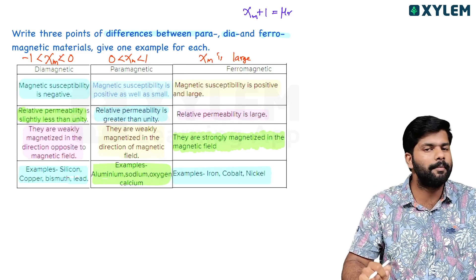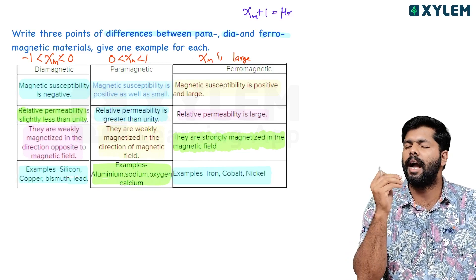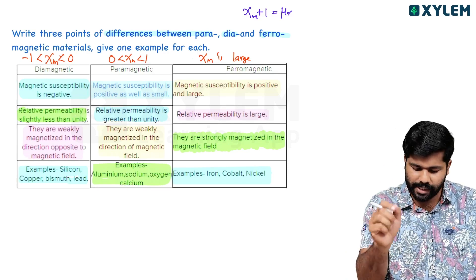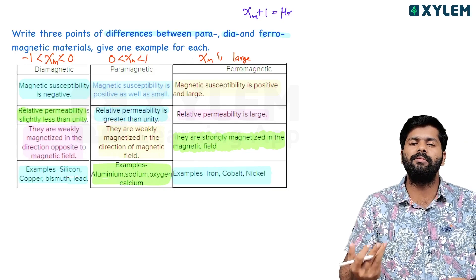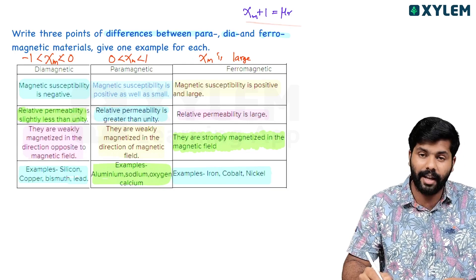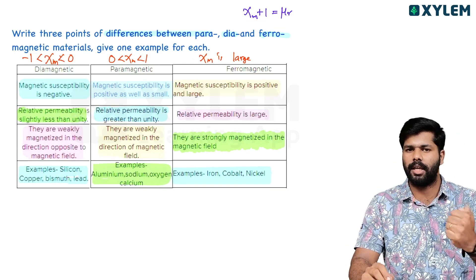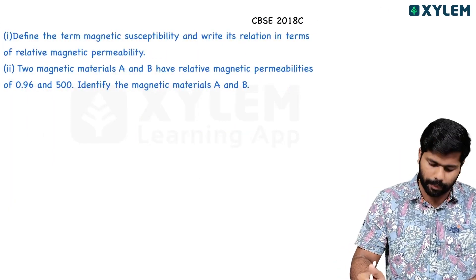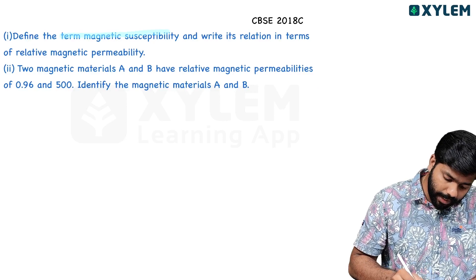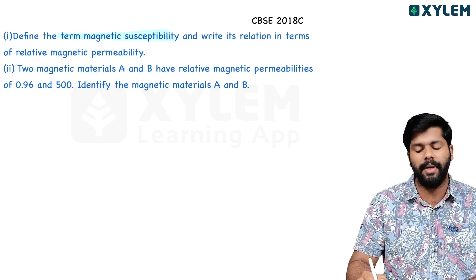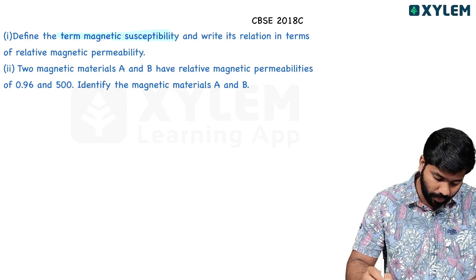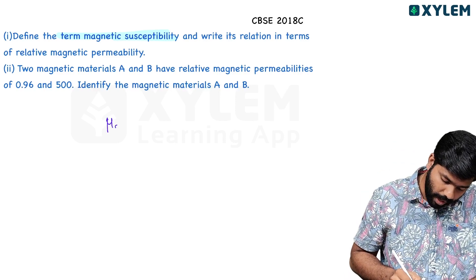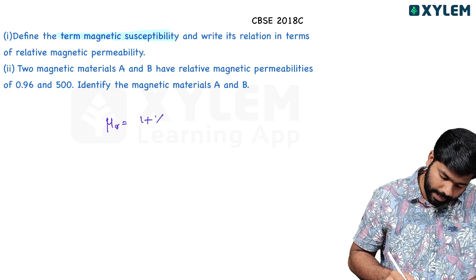We should know a minimum of 3 differences for magnetic material classifications. In the previous year exam, a question was asked: define the term magnetic susceptibility and write the relation in terms of relative magnetic permeability. We have already explained the relation: μr = 1 + χm.